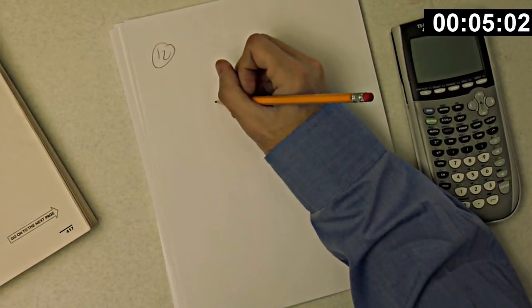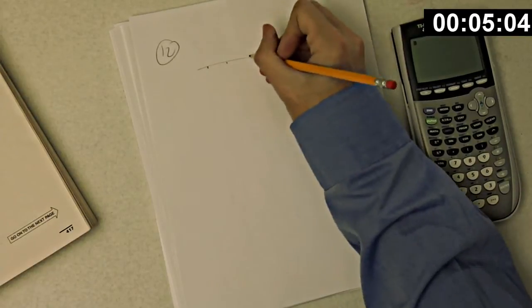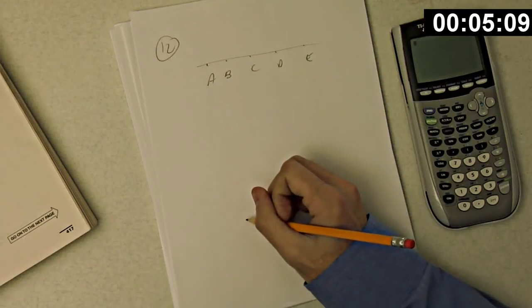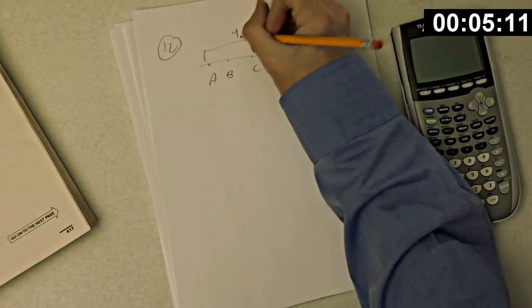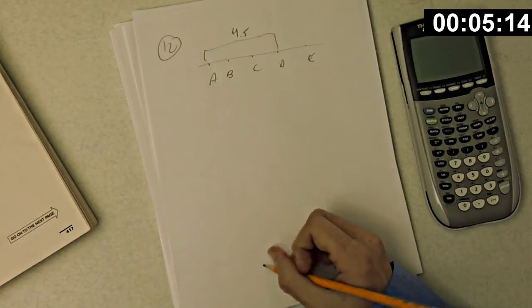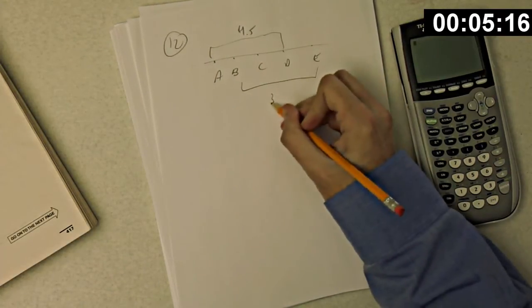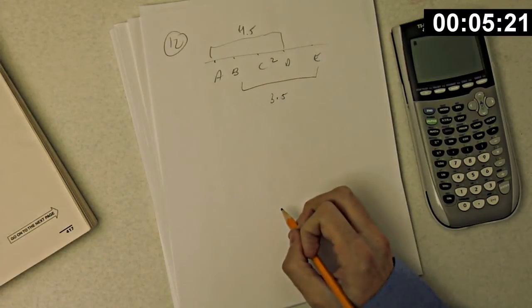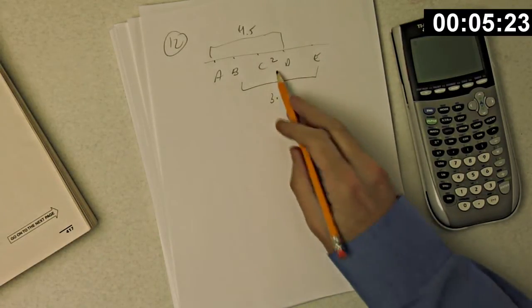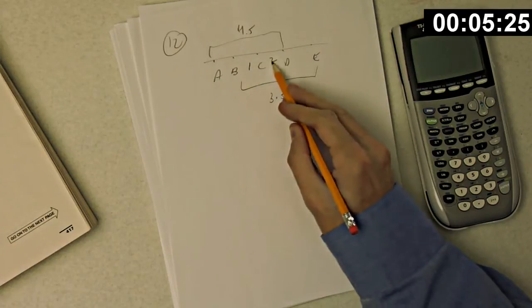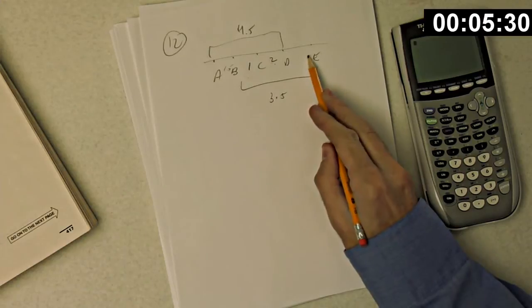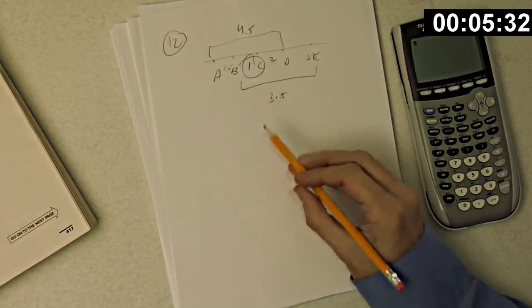Number twelve. Five different points A, B, C, D, and E lie on a line in that order. The length of AD is 4.5, the length of BE is 3.5, and the length of CD is 2. What is one possible length of BC? Trying BC equals 1: that makes AC equal to 3 and CE equal to 0.5. It looks like 1 works, so the answer is 1.